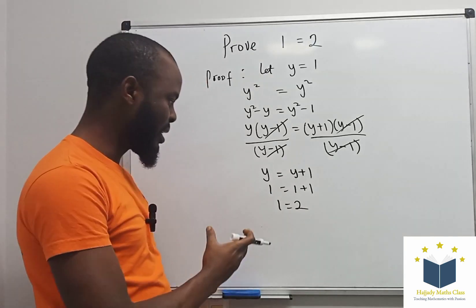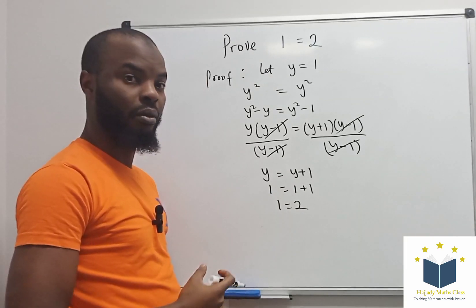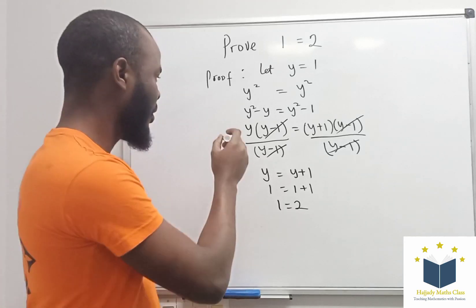Looking at this, I saw that 1 equals 2. But this is wrong. Why? Because coming back to this, you can see that we are dividing by (y - 1).